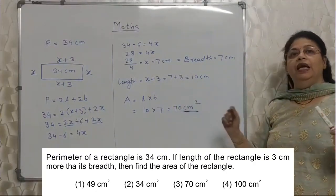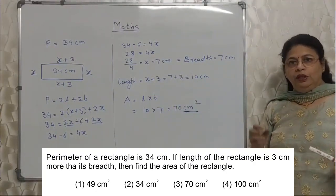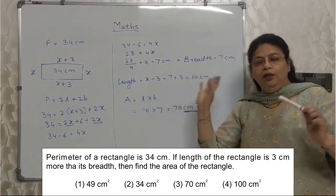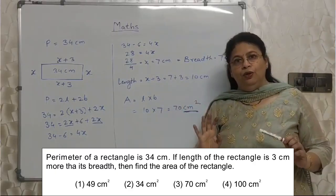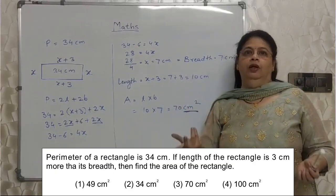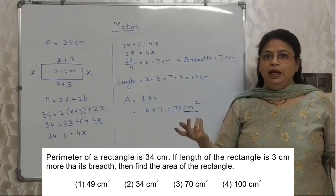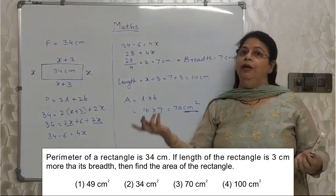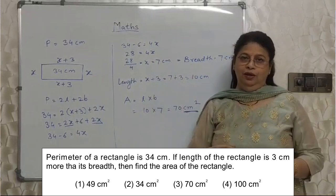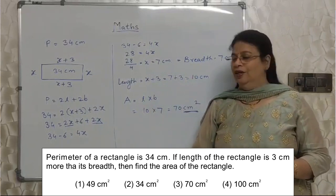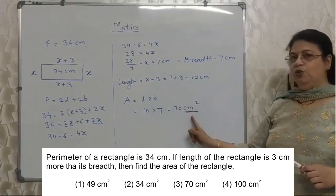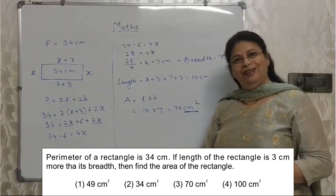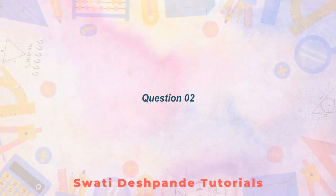If you just write '70 centimeter,' everything is wasted. We can't afford to lose marks. We need to pay a little more attention to the units. 70 centimeter is not the same as 70 centimeter square. So this is very, very important. The answer is 70 cm².